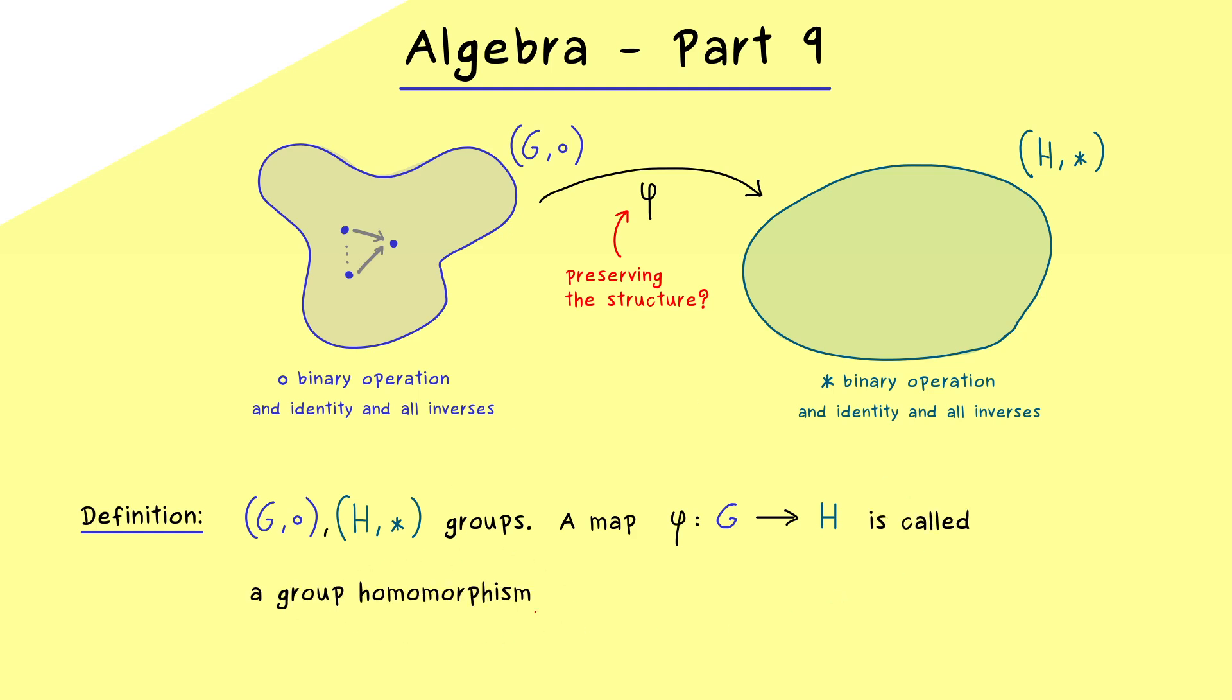And there we call it a group homomorphism if it satisfies the following property. We just take two elements a and b from the group G and put them together with the binary operation. And then obviously on the right hand side in H we have the two images φ(a) and φ(b). And now these images can be combined with the binary operation in H. And there a group homomorphism is so nice that this is the same as the image of a with b.